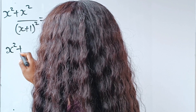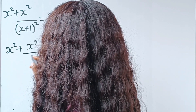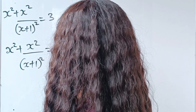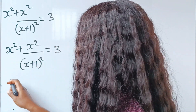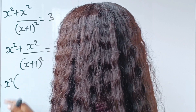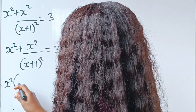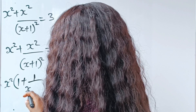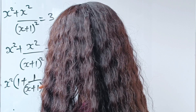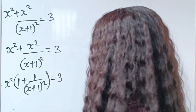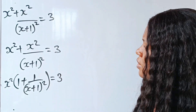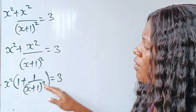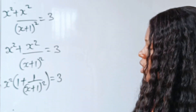So we're going to have x squared plus x squared divided by (x+1) squared, equal to 3. Let's factorize. We have x squared in brackets, so for this side we have 1 plus, and for here we're going to have 1 divided by (x+1) squared, equal to 3. The next thing we need to do is solve whatever we have inside the brackets.